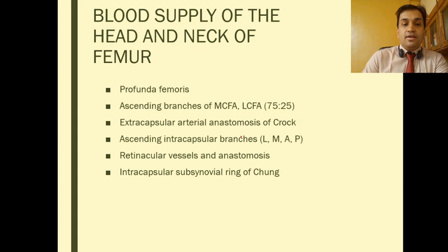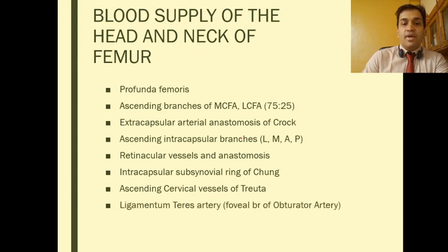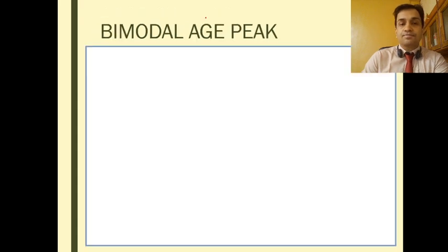These anastomose to form the retinaculum and together form the intracapsular subsynovial ring of Chung, which provides the ascending cervical vessels of Troeta — about 75% — and the remaining 25% comes from the ligamentum teres artery or foveal branch of obturator artery.